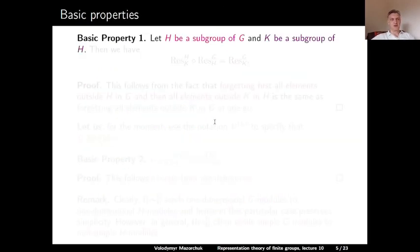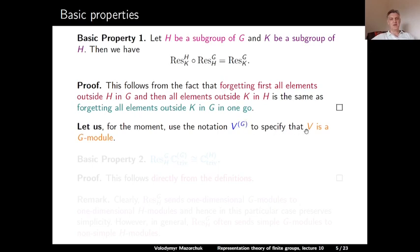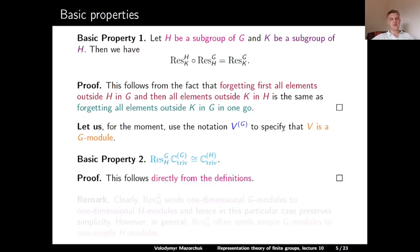Let us describe basic properties of the restriction. Basic property one: let H be a subgroup of G and K be a subgroup of H. Then the restriction from G to K equals first the restriction from G to H, followed by the restriction from H to K. This follows directly from the fact that forgetting all elements in G outside H, and then all elements in H outside K, is the same as forgetting all elements outside K in G in one step. Basic property two: restricting the trivial G-module from G to H gives the trivial H-module, which follows directly from the definitions.